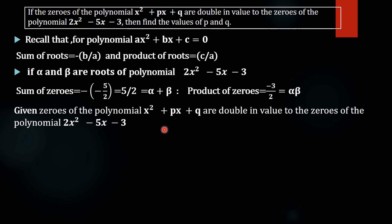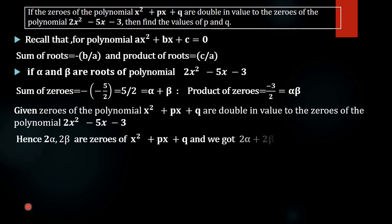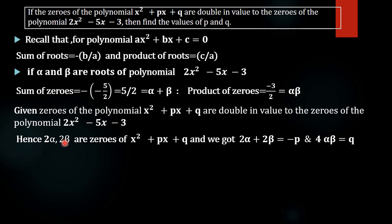It is given that the zeros of x² + px + q are double in value to the zeros of 2x² - 5x - 3. So we can take 2 alpha and 2 beta as the zeros of x² + px + q. Then 2 alpha plus 2 beta equals minus p by 1, that is minus p, and 4 alpha beta equals q, which equals c by 1.